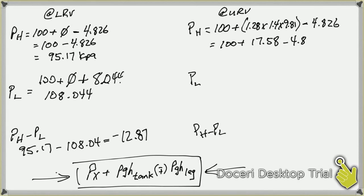So we do this math here, we end up with 100 plus 17.58 minus 4.826, gives us a magical number of 112.75 kPa. That's the high cell. The low cell, what's in play there? Again, same thing: 100 kPa of vessel pressure. Because there's no process fluid hitting the seal, zero is the PGH from the tank.